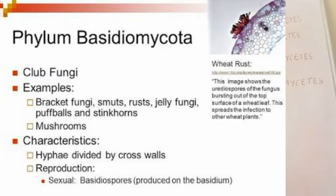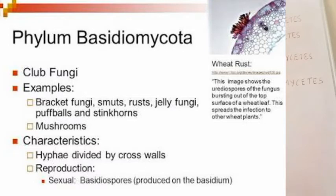The third phylum is Basidiomycetes. These include smuts, rusts, puffballs, and mushrooms. You would have heard about the smut disease and rust disease of wheat — all caused by Basidiomycetes. They are called club fungi because, for example, mushroom has the shape of a club with a stalk and upper elaborated portion. The hyphae are septate with cross walls. The fruiting body is called a basidium, which produces spores called basidiospores.